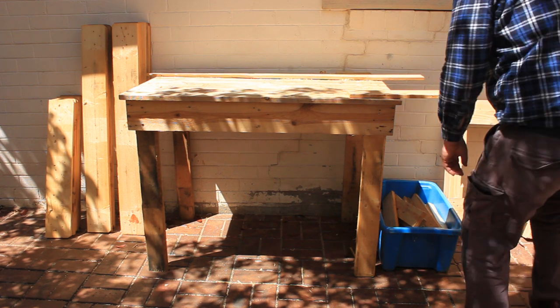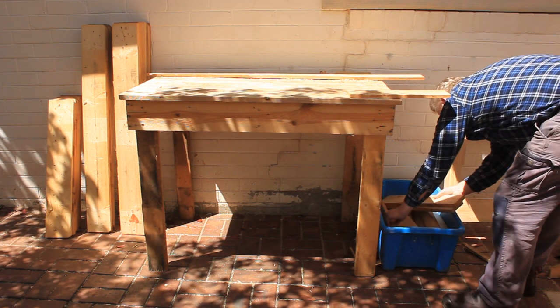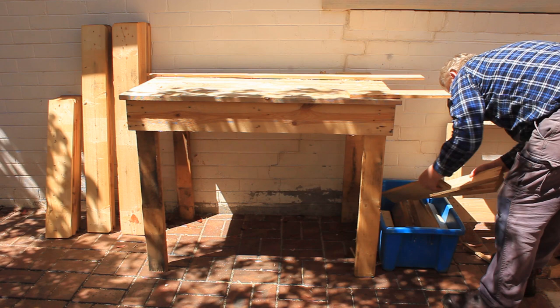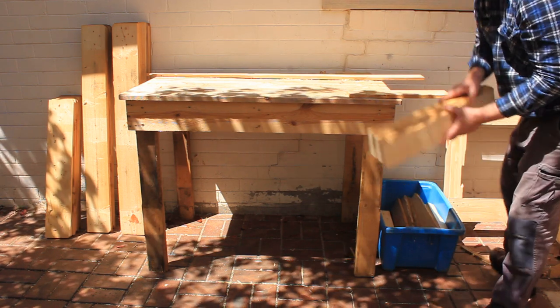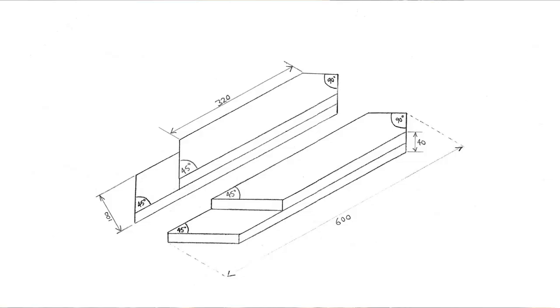Start by retrieving the longest narrow board offcuts from the blue tub. To make four struts we need four boards of 600 millimeters (24 inch) and four shorter ones of 475 millimeters (18 and a half inch).